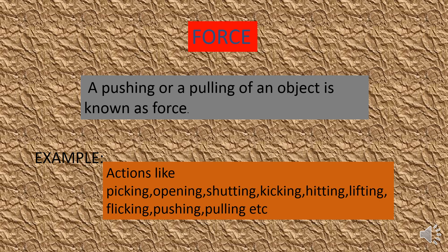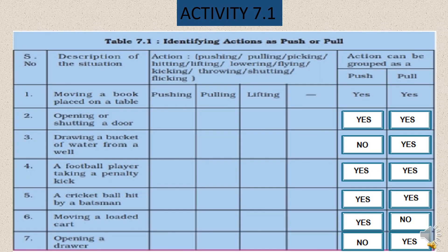Now let us do one activity — Activity number 7.1. If you see here, a table has been given. In that table, certain examples are mentioned. In each example, we are moving objects. We have to identify what type of action we are doing to move the object — we have to choose between push and pull, or both. Let us solve this activity.